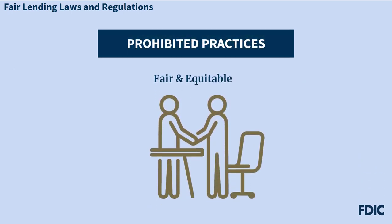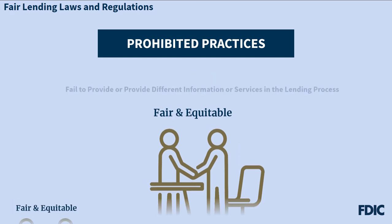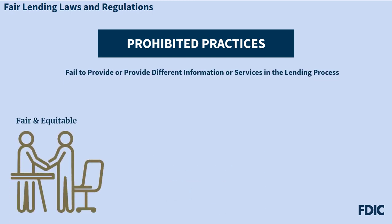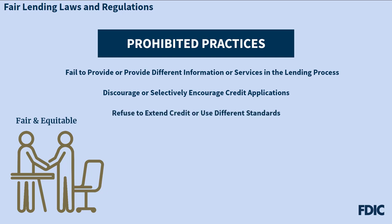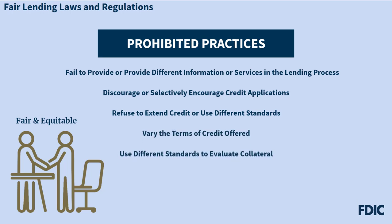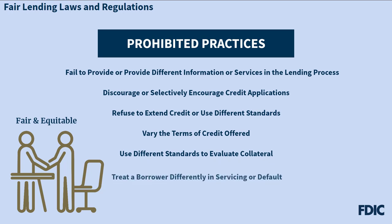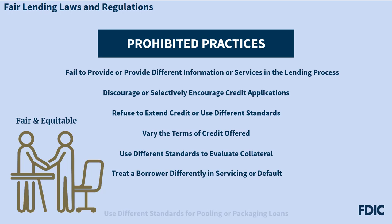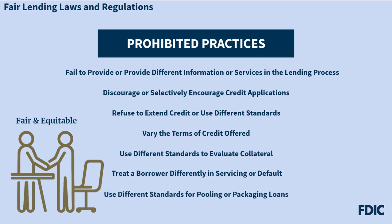Under the Fair Lending Laws, a lender may not, on a prohibited basis, fail to provide or provide different information or services regarding any aspect of the lending process, including credit availability, application procedures, or lending standards. A lender may not discourage or selectively encourage individuals who inquire or apply for credit, refuse to extend credit, or use different standards in determining whether to extend credit. A lender may not vary the terms of credit offered, use different standards to evaluate collateral, treat a borrower differently in servicing a loan or declaring default, or use different standards for pooling or packaging loans in the secondary market.